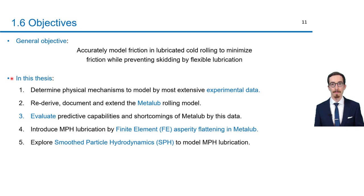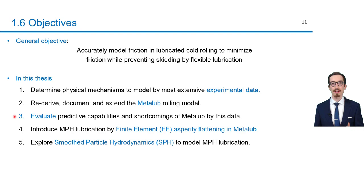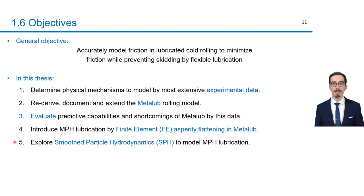In this thesis specifically, several intermediate targets were defined. The first is to determine the most important physical mechanisms in cold rolling based on the most extensive experimental data available. Secondly, the most promising model — the MetaLoop model — has to be re-derived, documented, and extended to include those physical mechanisms. Third, its predictive capabilities must be evaluated to determine its shortcomings. One shortcoming is missing MPH lubrication — microplastohydrodynamic or hydrostatic lubrication. Therefore, the fourth objective is to introduce MPH lubrication by finite element simulations of asperity flattening in MetaLoop, and the fifth is to explore modeling MPH lubrication by smooth particle hydrodynamics.